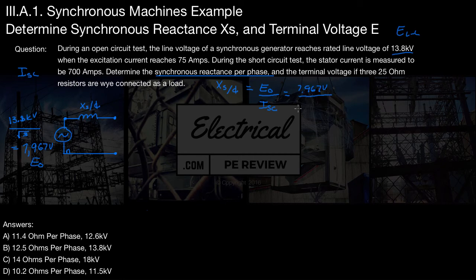And from the problem, we know that I short circuit equals 700 amps. We divide these two, and we come up with our synchronous reactance equals 11.4 per phase.